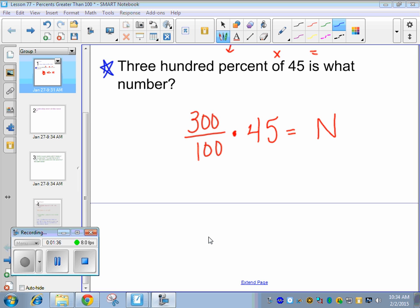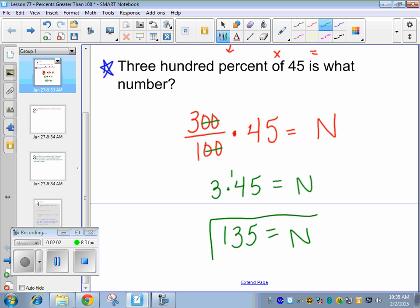N is by itself. So we're just multiplying 300 over 100 times 45, and we can go ahead and cancel these zeros. So it's 3 over 1, which is just 3 times 45. So 3 times 5 is 15, carrying 1, 3 times 4 is 12, add 1.